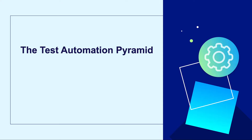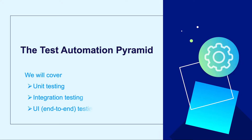Before launching to the market, every software system needs testing at different levels to ensure high quality for specific objectives. Typical test levels consist of, from the pyramid base to the top: unit testing, integration testing or service testing, system testing, and acceptance testing.